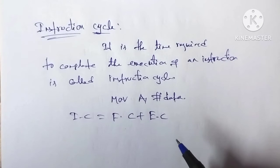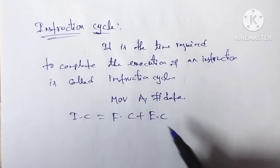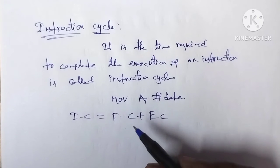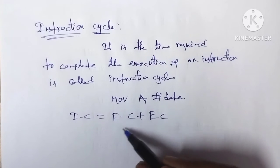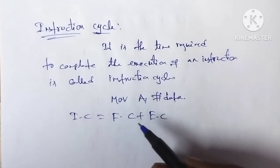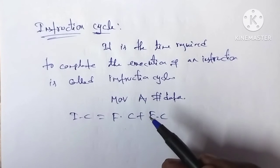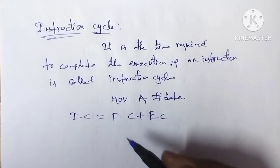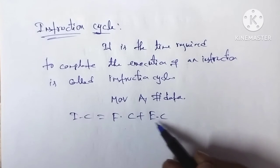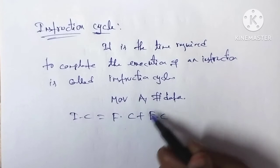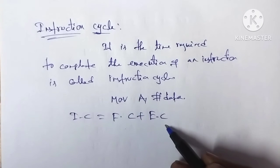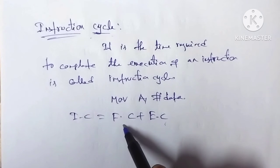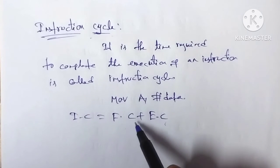For example, for a MOVE A, #data instruction — the time taken to fetch that instruction from memory is called the fetch cycle. Next, decoding the instruction (converting to machine language) is the decode step. Then executing it — the time taken to execute is called the execution cycle. So the instruction cycle is the combination of fetch cycle and execute cycle.